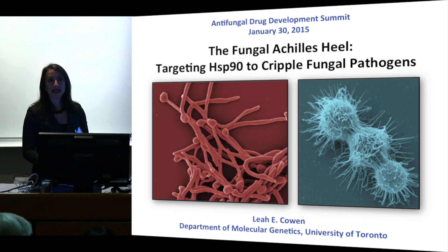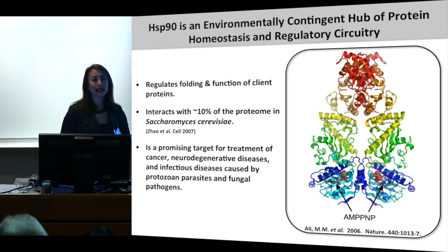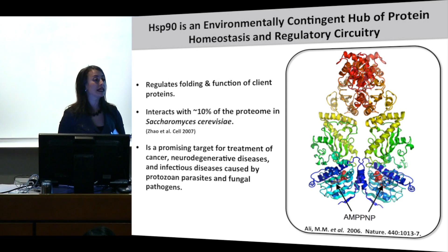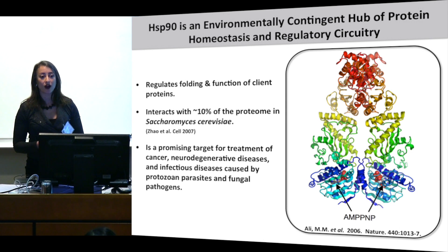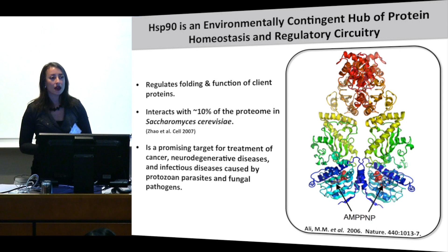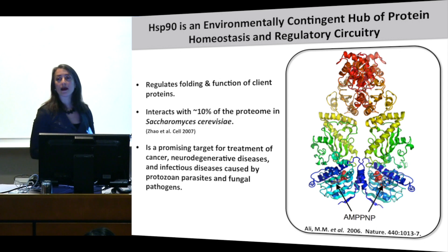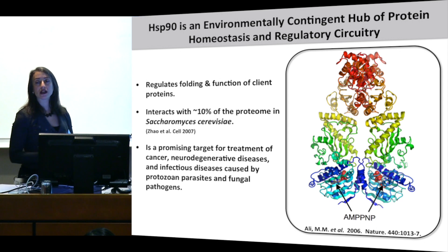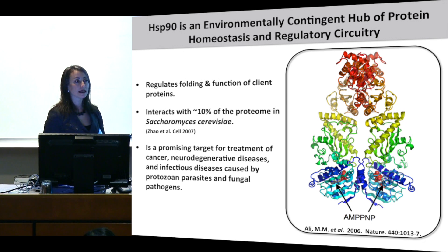Let me introduce you to Hsp90. It is a molecular chaperone. It's conserved and essential in all eukaryotes in which it's been tested — therein lies the therapeutic challenge we'll face later on. What it does as a chaperone is regulate the form and function of a very diverse but select set of client proteins, many of which are key regulators of cellular signaling.